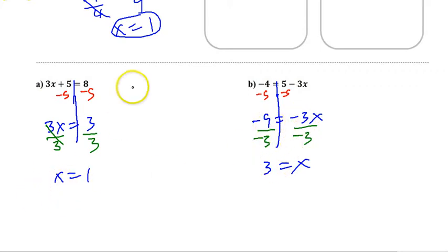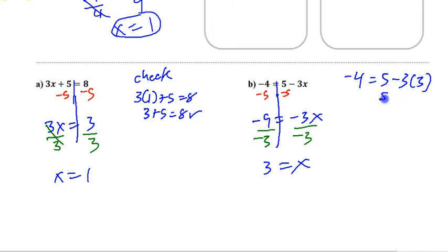And now if we check it, remember, it's 3 times what plus 5 equals 8? So 3 plus 5 equals 8. And that is a check. 100% correct. Over here, negative 4 equals 5 minus 3 times 3. So 5 minus 9, and 5 minus 9 is negative 4. Checks out perfectly. We're just trying to make sure our equation works out perfectly.